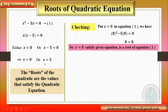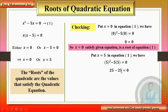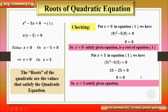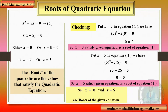Now I check the second value, x equals 5. Put x equals 5 into the equation: 5 squared minus 5 times 5 gives 25 minus 25 equals 0, so 0 equals 0. Left-hand side equals right-hand side, so x equals 5 satisfies the given equation and is also a root. Simply, x equals 0 and x equals 5 are the roots of the given equation.